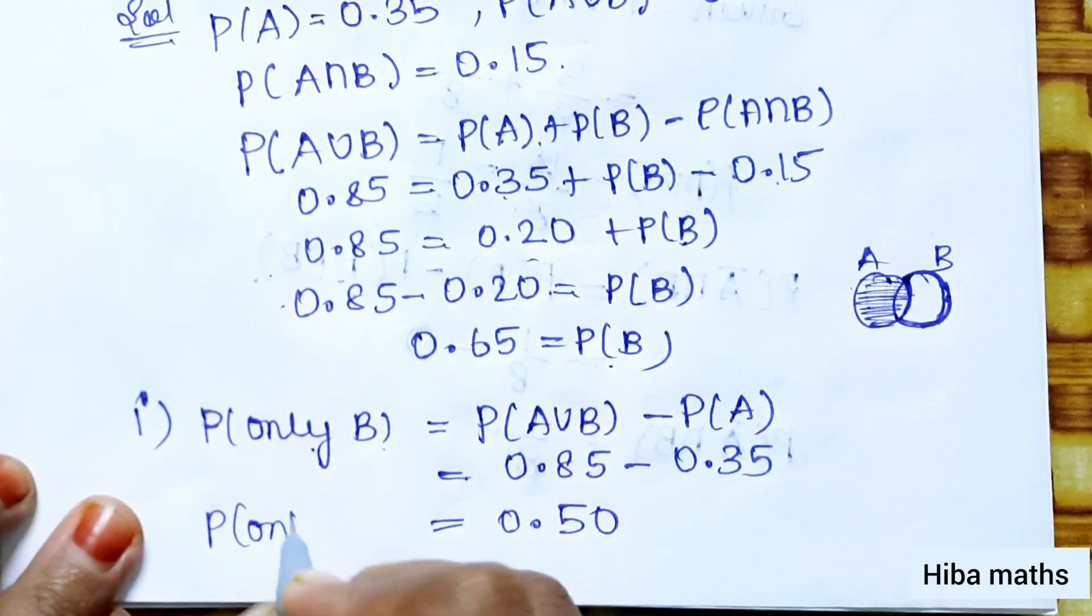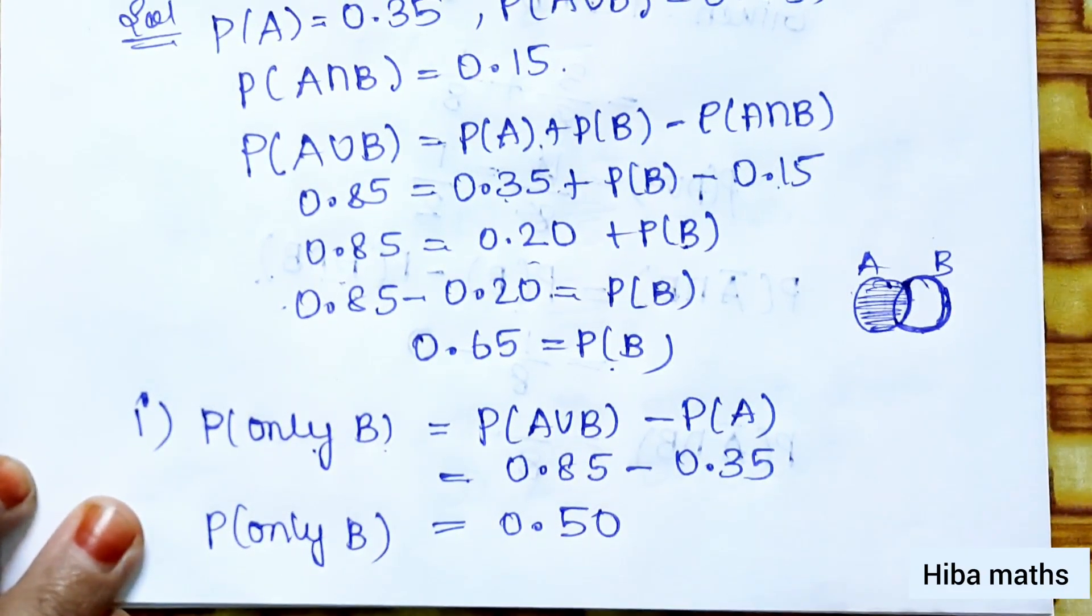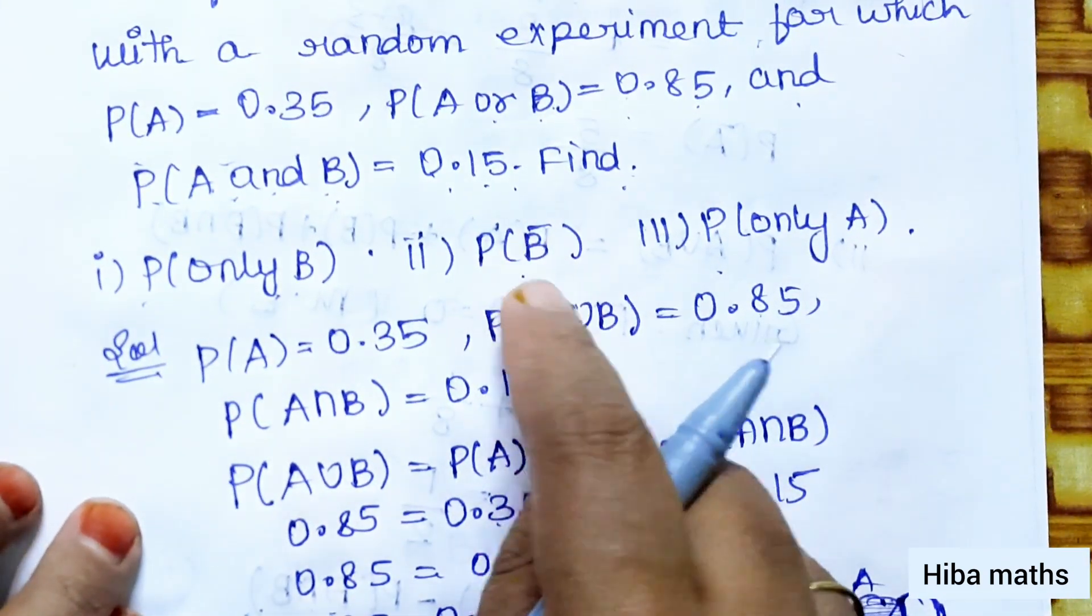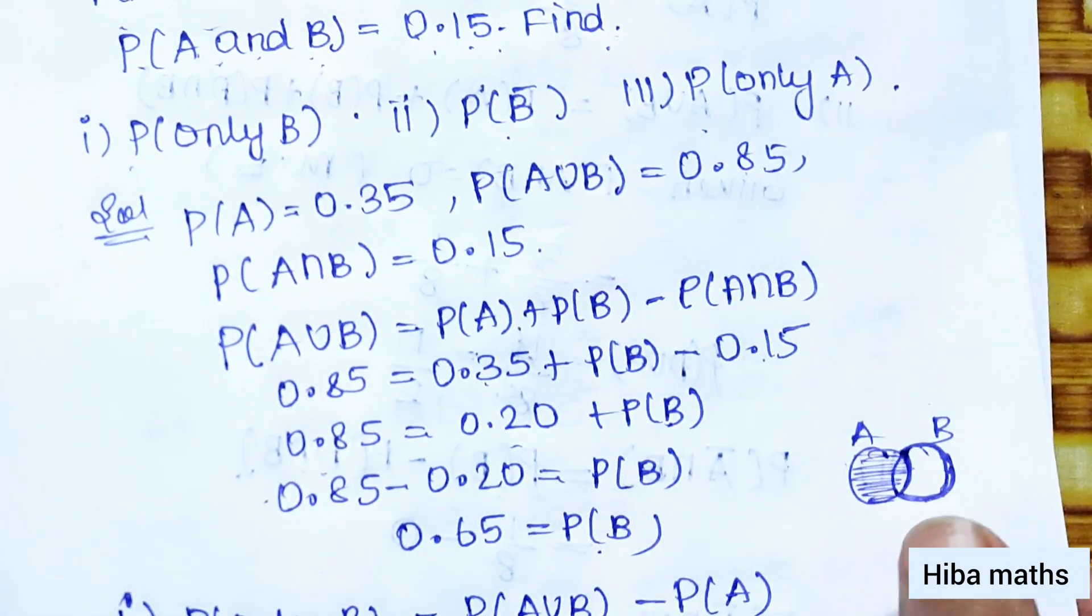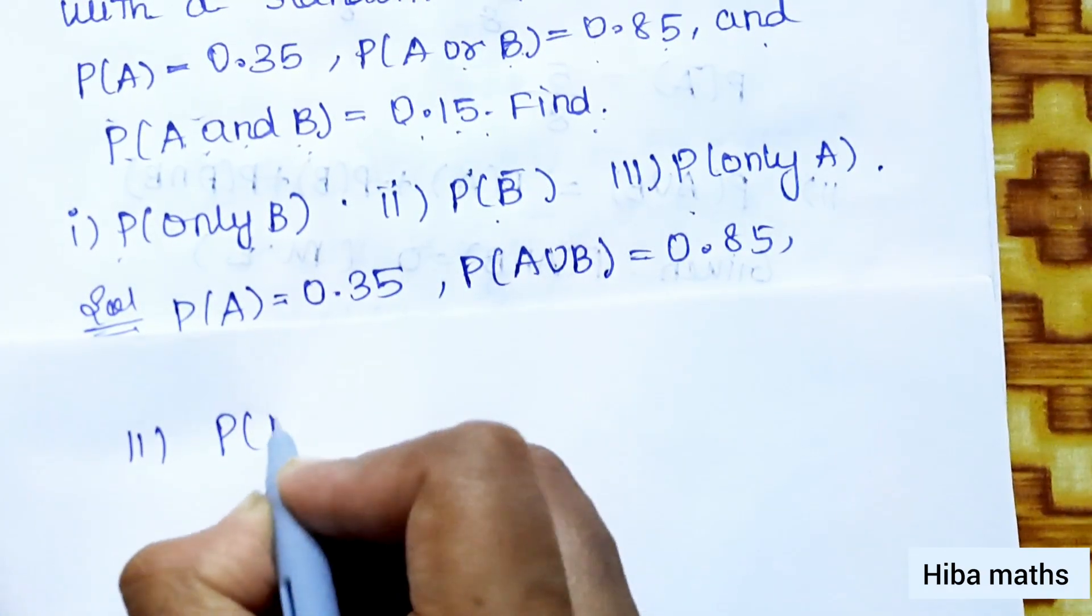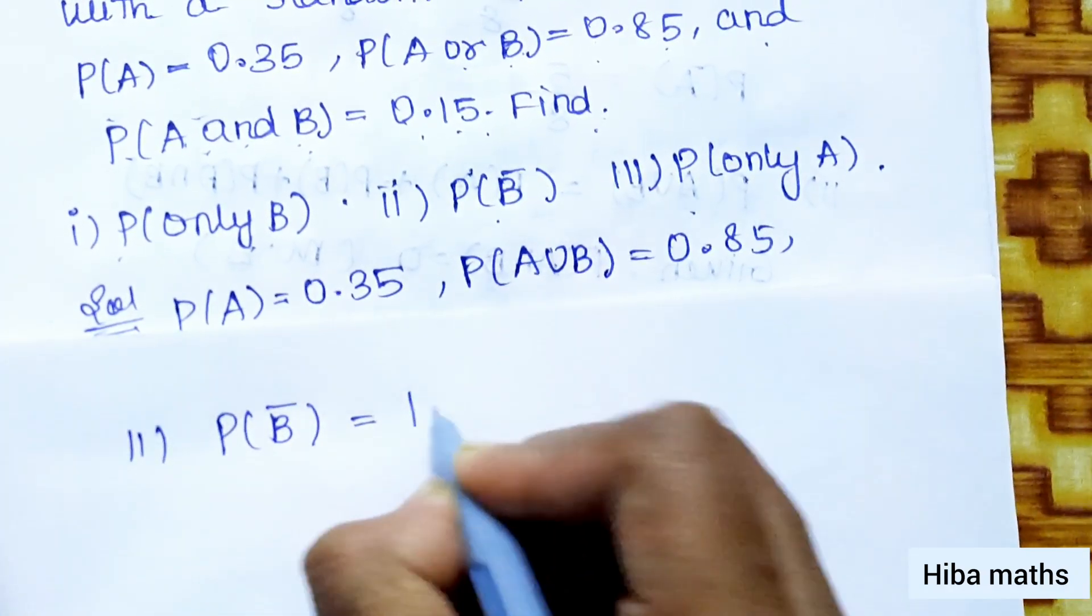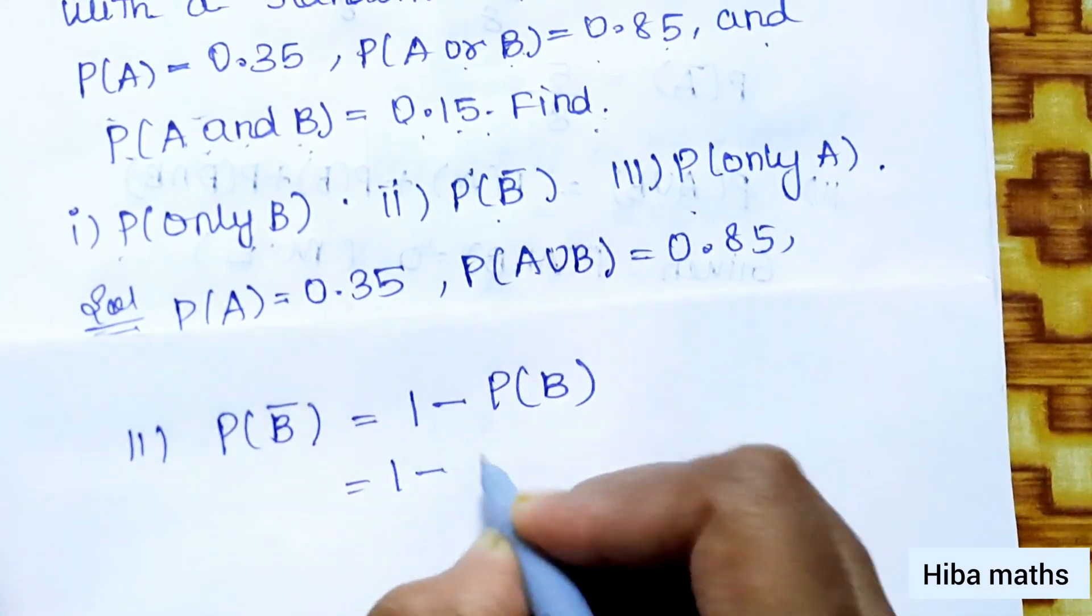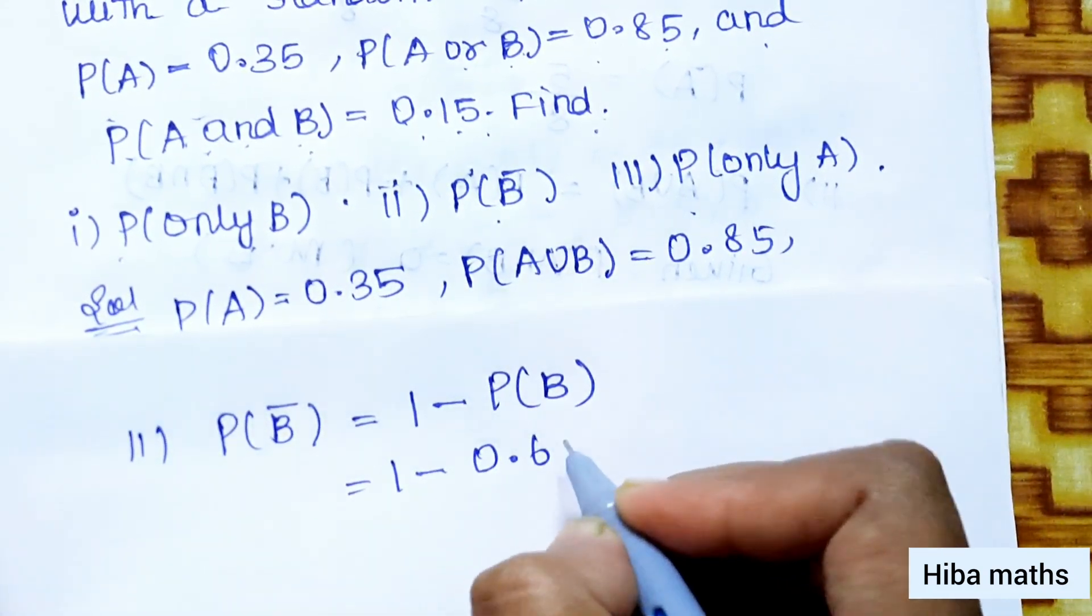Second subdivision, P(B bar) equals 1 minus P(B). So 1 minus 0.65.